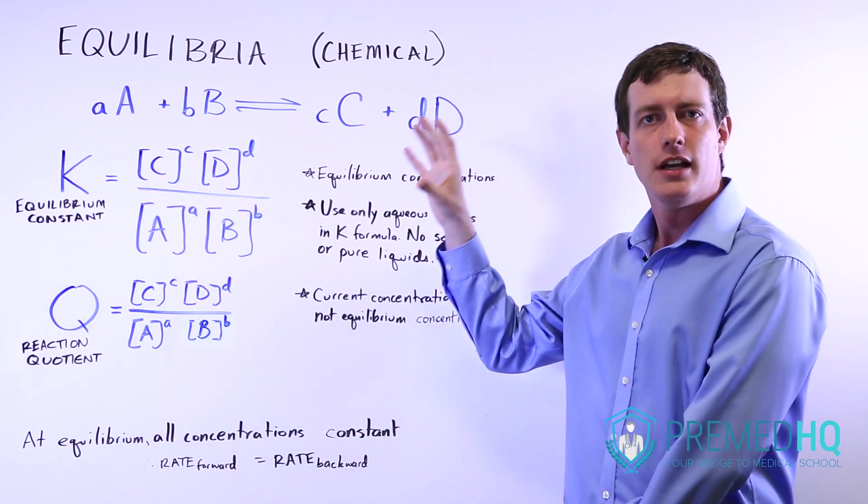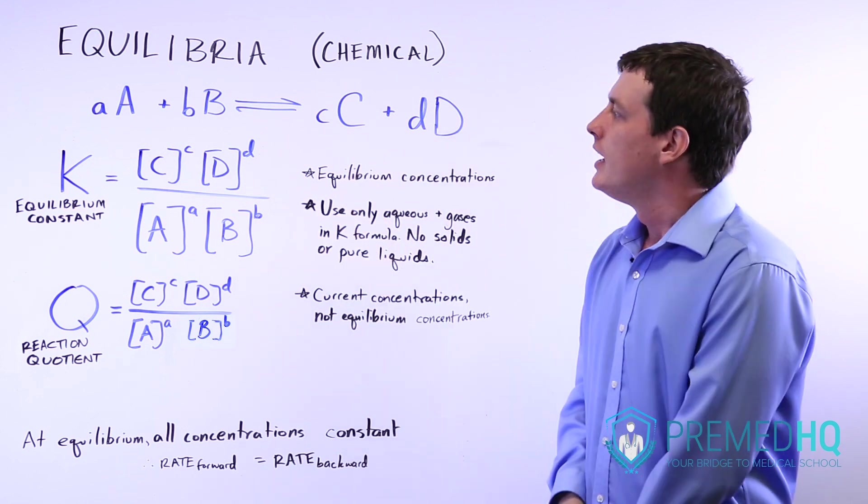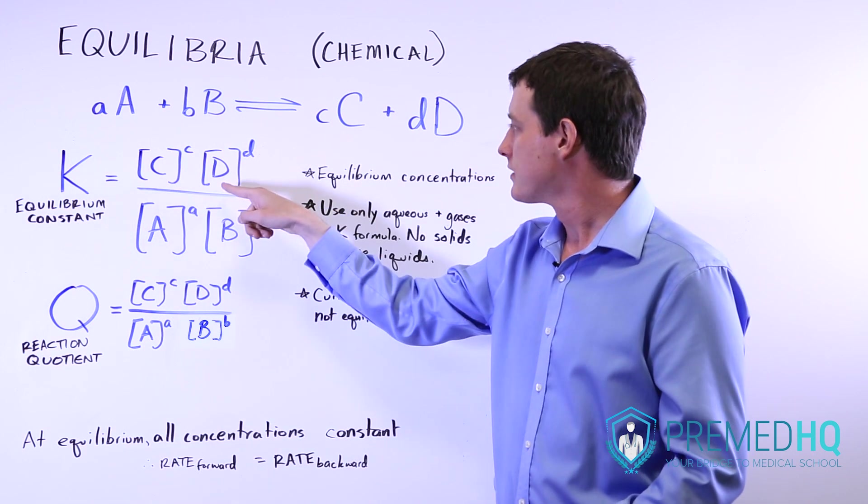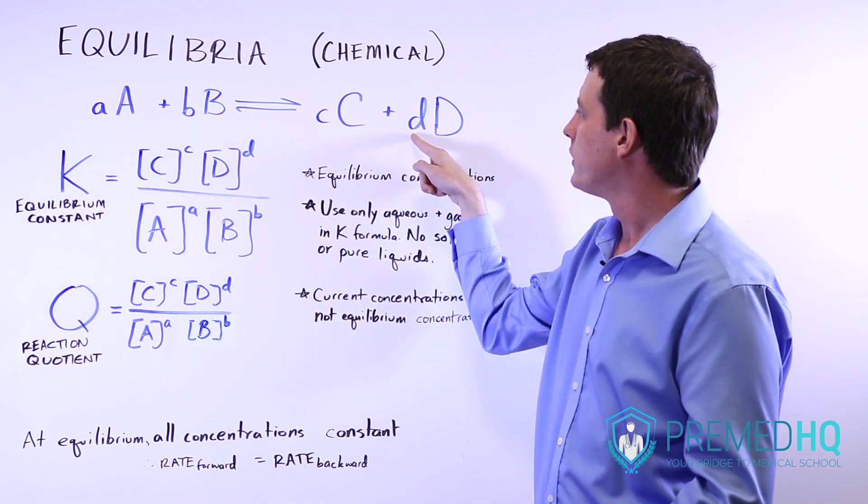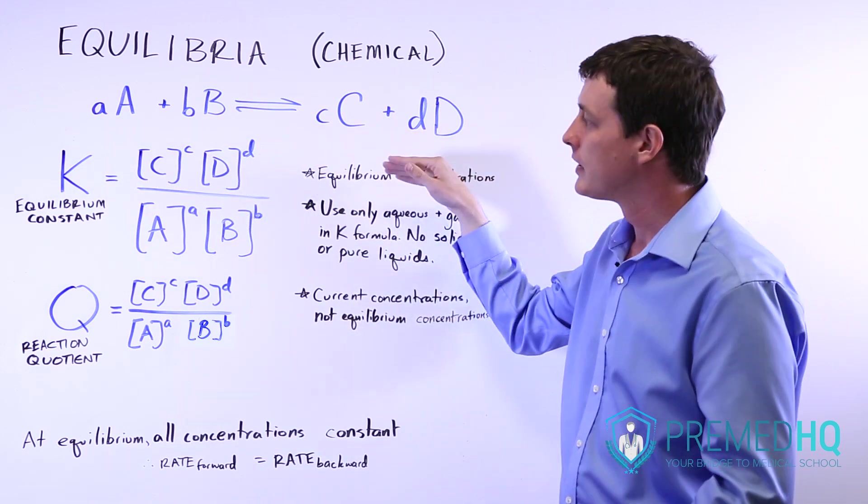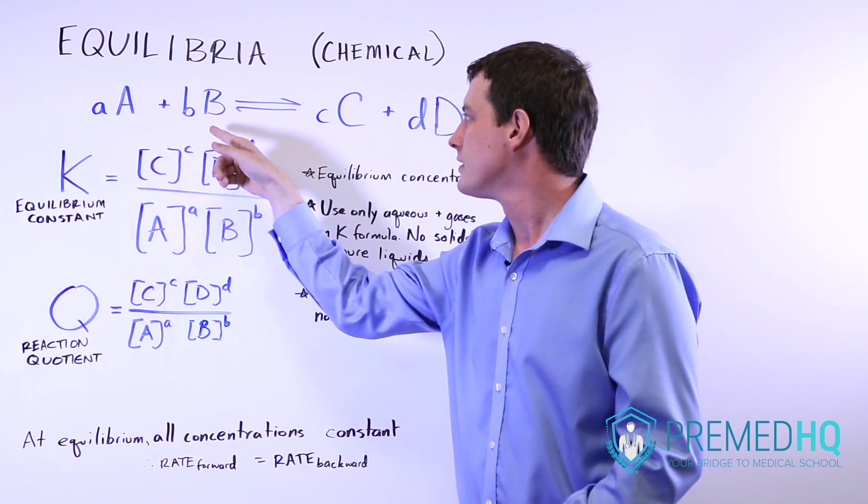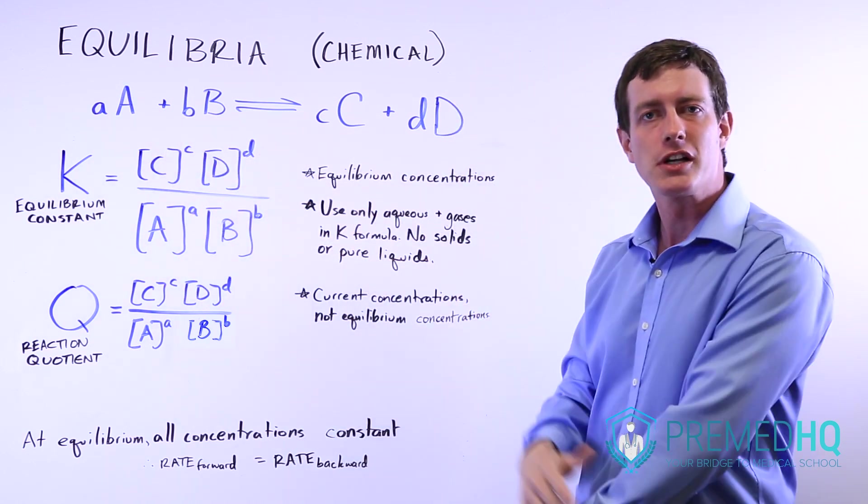It's a number for any reaction that remains constant. And it's defined as the concentration of the products raised to their stoichiometric coefficients, divided by the concentrations of the reactants raised to their stoichiometric coefficients.